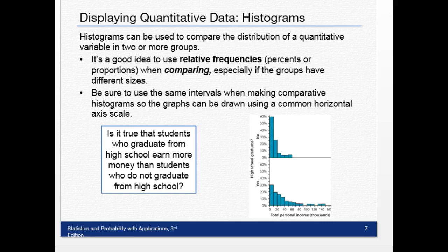So here's a question. Is it true that students who graduate from high school earn more money than students who do not graduate from high school? So we look at this. It says high school graduate, those who did not graduate from high school. If you look at the top histogram here, you can see that 60% of them make less than $10,000 a year.